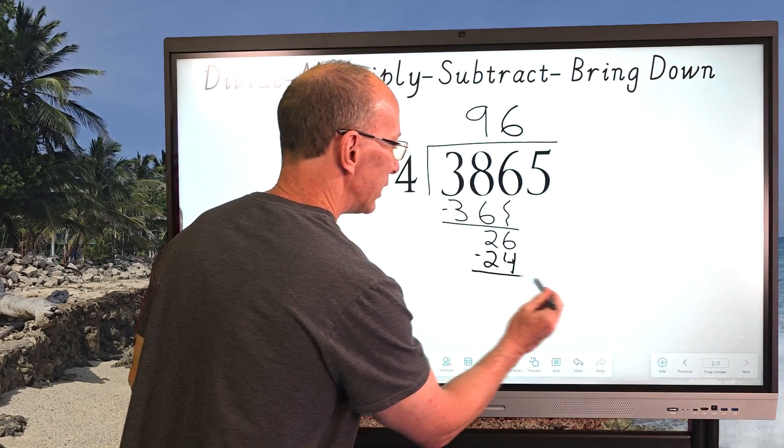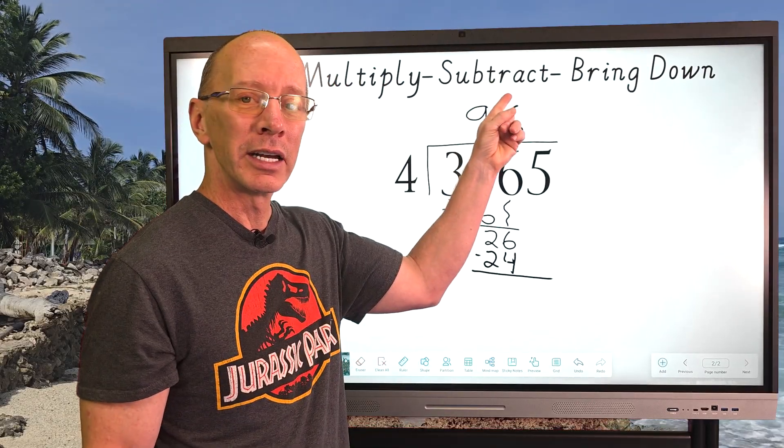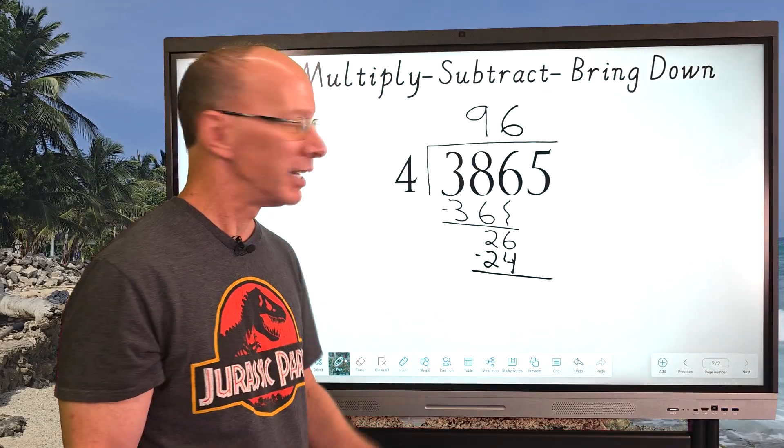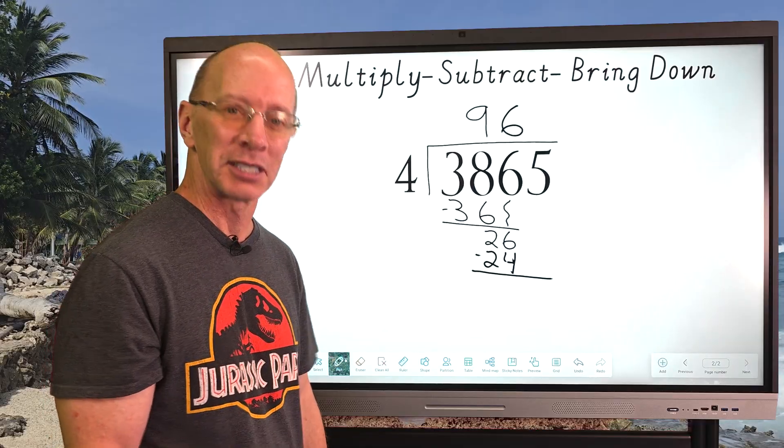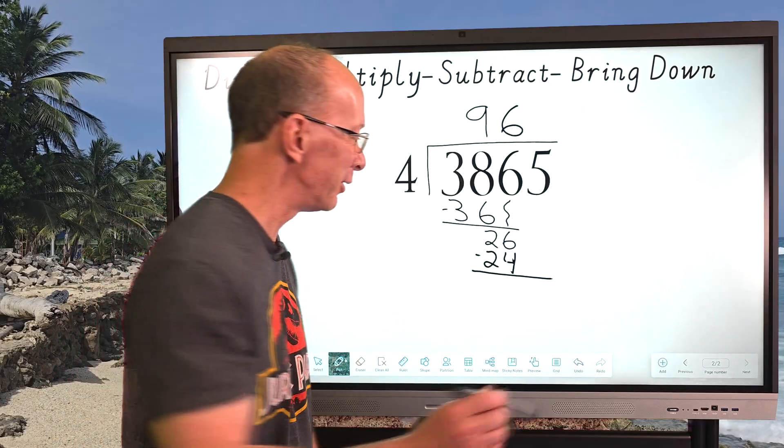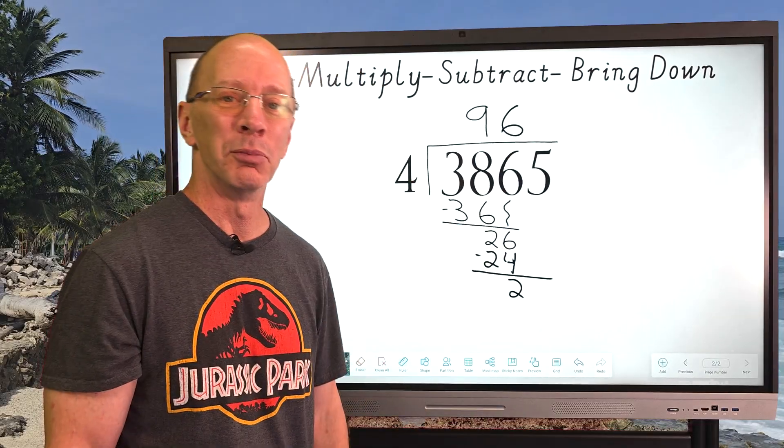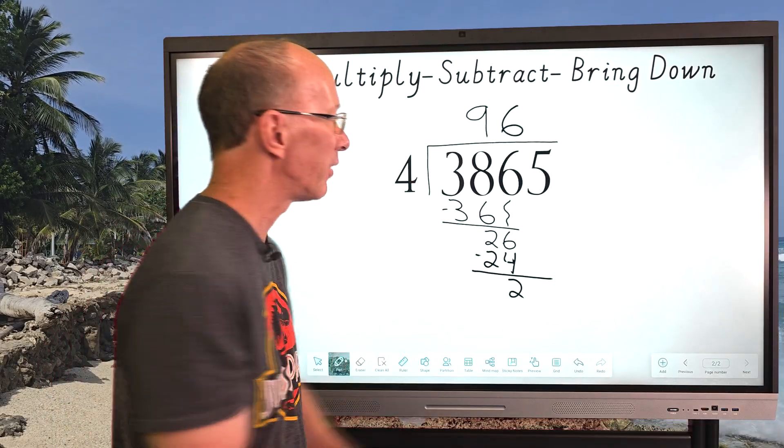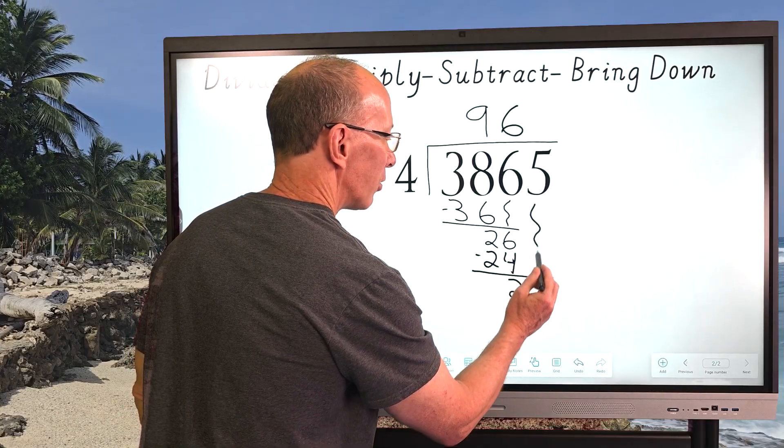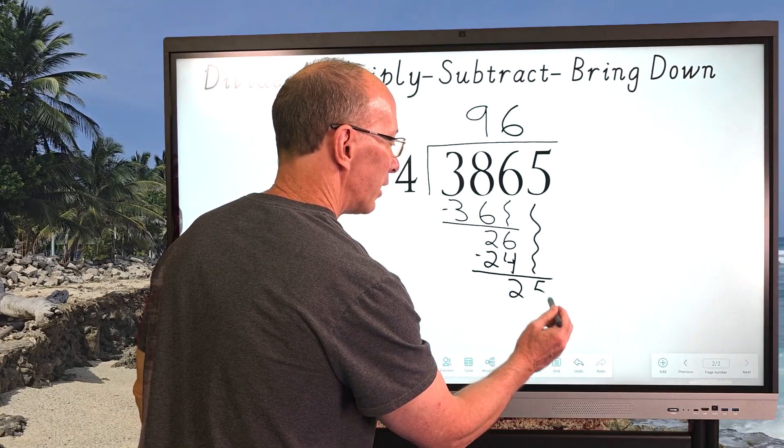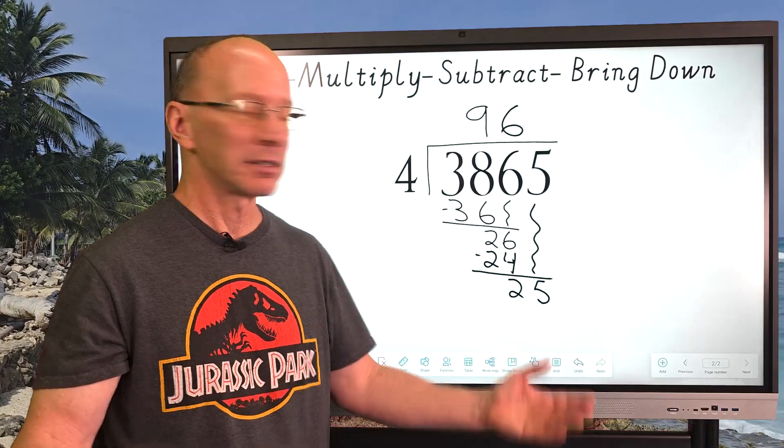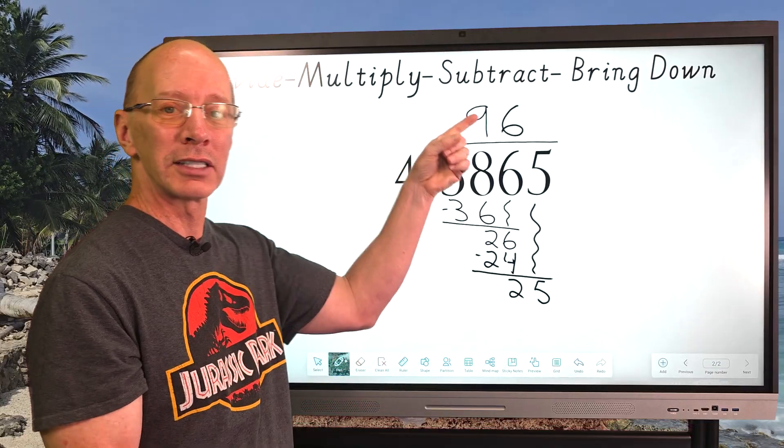And then I'm going to go ahead and then do the next one, which is subtraction. So 26 minus 24 equals two. And then our next step is to bring it down. I'm going to bring that next number down, which is a five. Just drop that all the way down here and then put five here. And now we just start the whole process over.